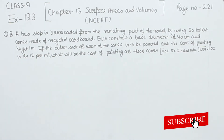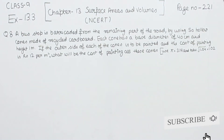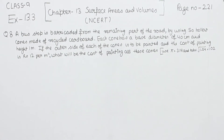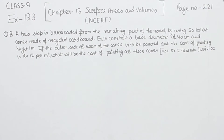A bus stop is barricaded from the remaining part of the road by using 50 hollow cones made of recycled cardboard. Each cone has a base diameter of 40 cm and a height of 1 meter. If the outer side of each of the cones is to be painted and the cost of painting is rupees 12 per meter square, what will be the cost of painting all these cones?